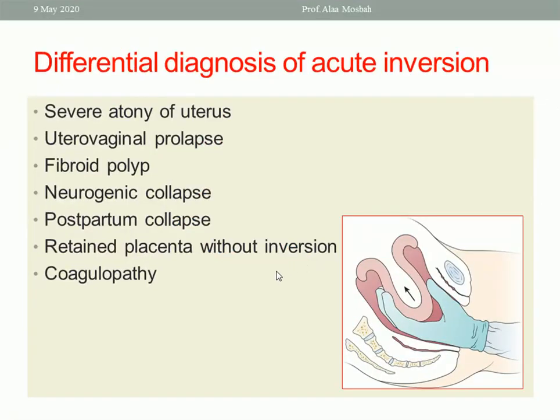The differential diagnosis of acute puerperal inversion includes: severe atony of the uterus, utero-vaginal prolapse, neurogenic collapse, postpartum collapse, fibroid polyp with pregnancy, retained placenta, and coagulopathy.